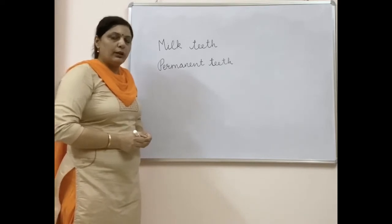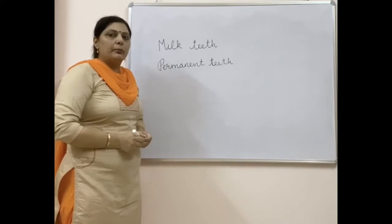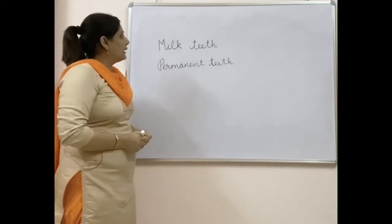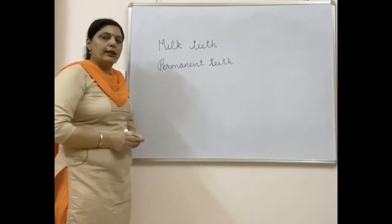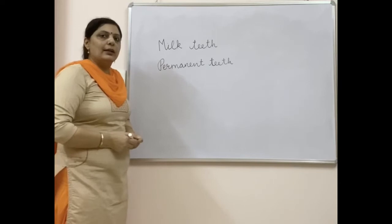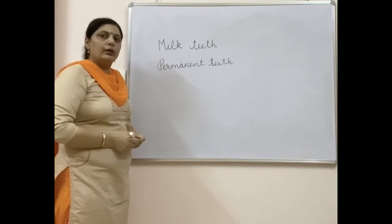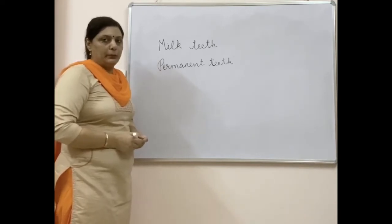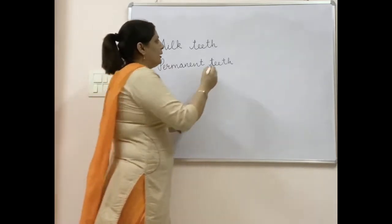Milk teeth are so called because a child from birth up to six months is totally dependent on milk, so the teeth which appear at that age are called milk teeth. The permanent set — once these teeth have grown, they remain for the rest of the person's life. Milk teeth are 20 in number, whereas permanent teeth are 32 in number.